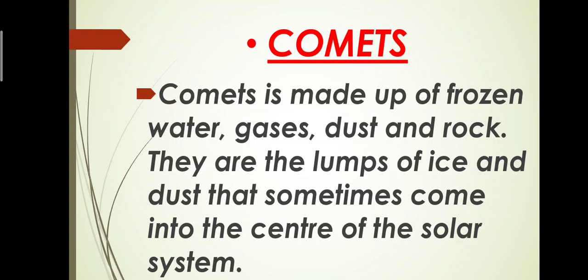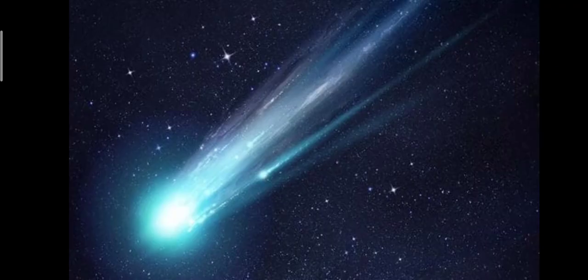Jets of gas and dust form long tails that we can see from the earth. These tails can sometimes be very long. Now let me show you the simple diagram of comet. As you can see this is comet, it is like a lump of ice and dust and it can be evaporated when it goes near to the sun by the heat of the sun.